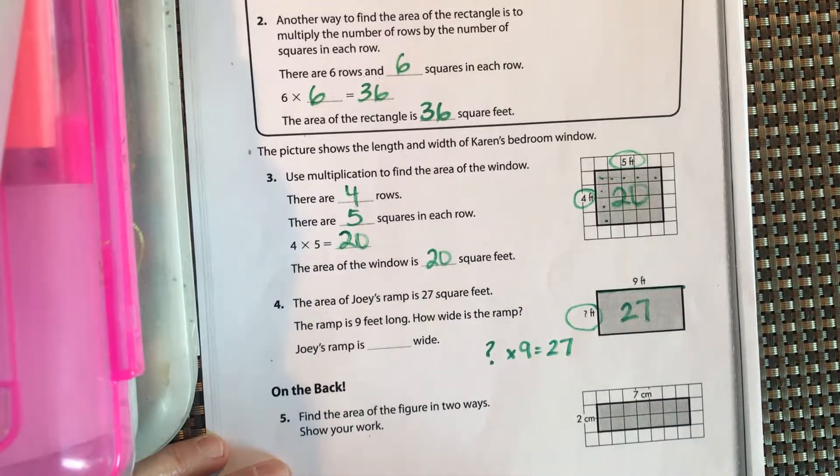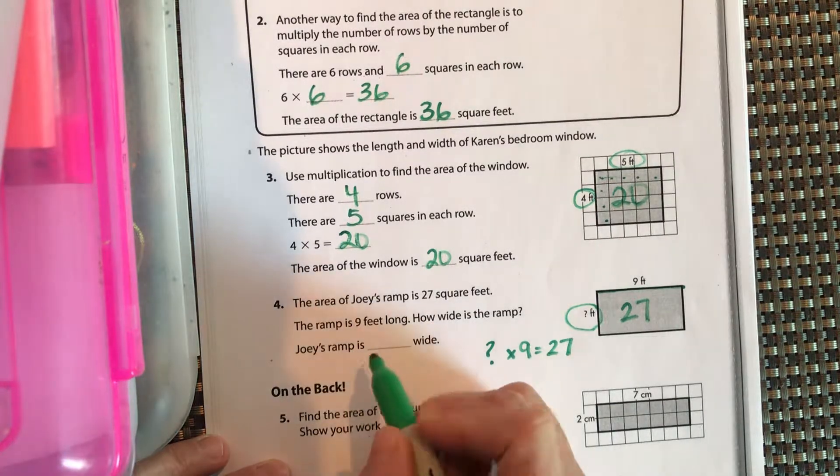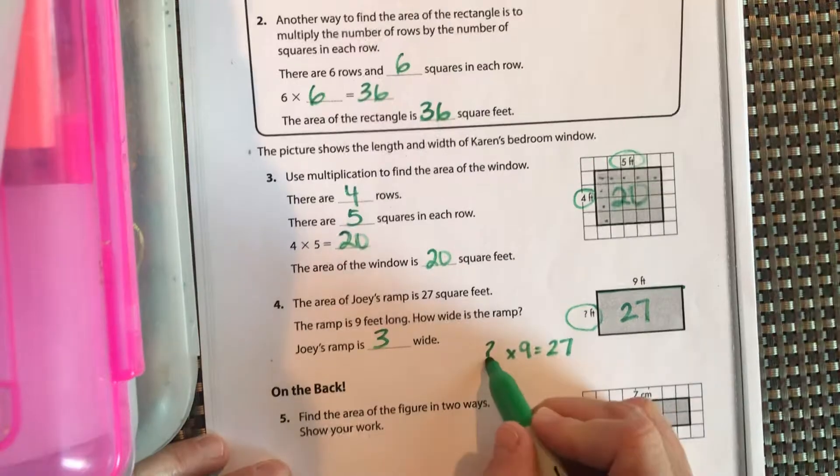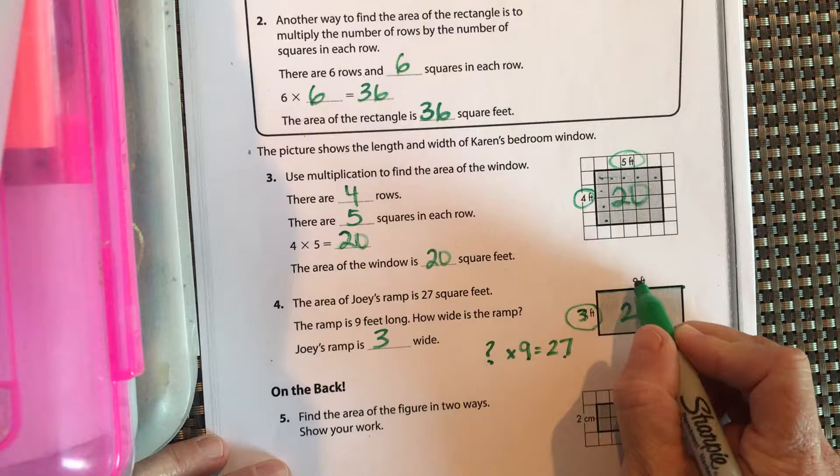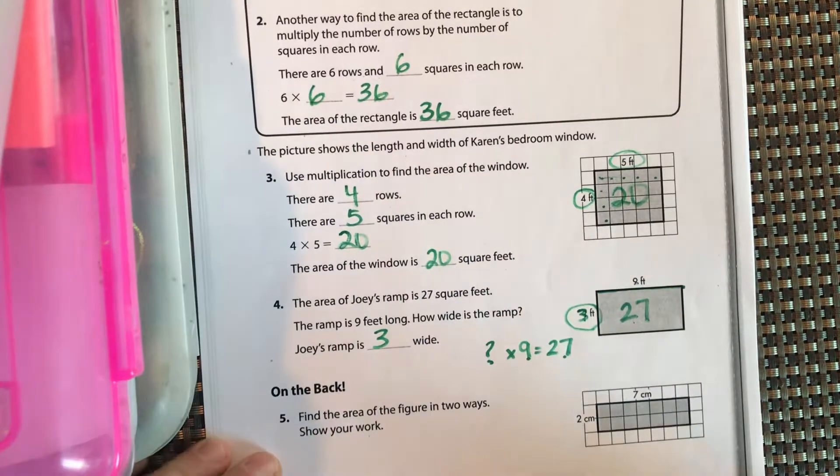Okay, you should come up with 3. 3 times 9 is 27. So therefore, this is 3 feet. 3 times 9 equals 27.